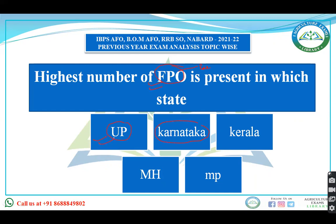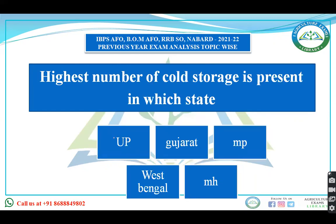Highest number of cold storage is present in which state — UP, Gujarat, Madhya Pradesh, West Bengal, or Maharashtra? When you talk about the number of cold storages, it is highest in Uttar Pradesh, then Gujarat. But when you talk about the capacity of cold storage, then it is Uttar Pradesh followed by West Bengal.